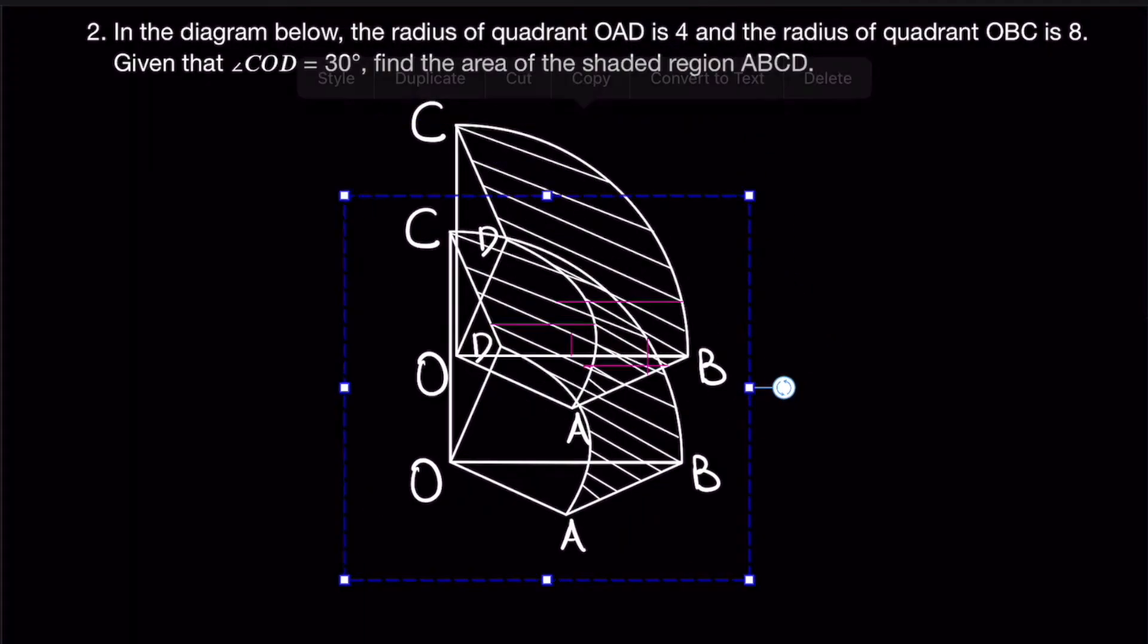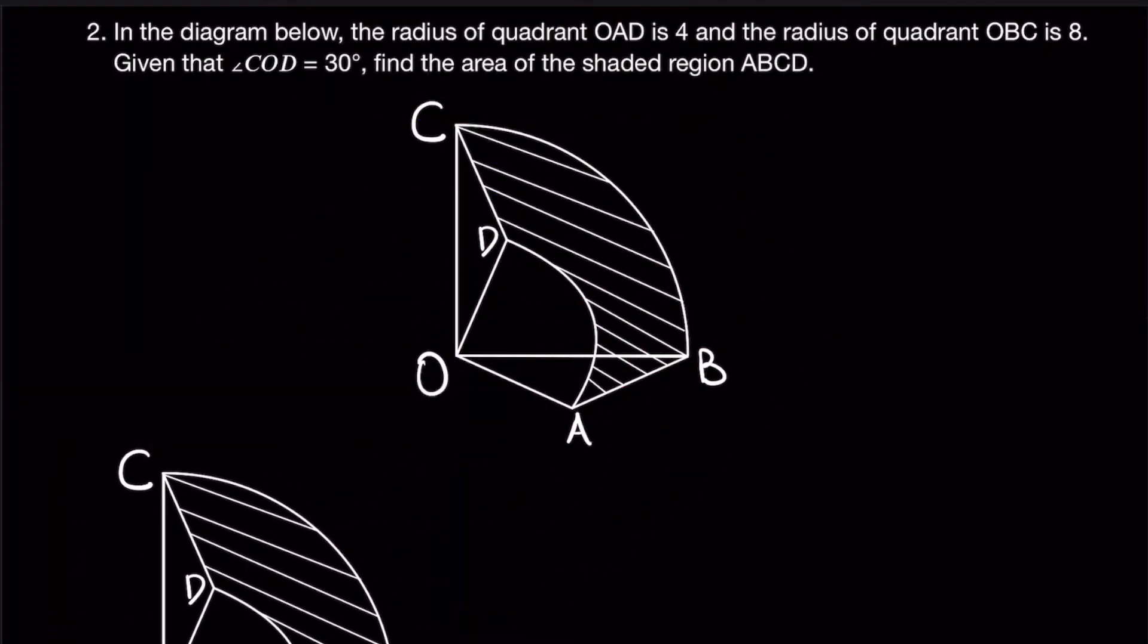Let me duplicate another model for us to use later. Alright, so firstly let's add in our angles which is 30 degrees for COD. Secondly, since we know that OBC is a quadrant, the remaining angle here is 60 degrees. And since we know that OAD is also a quadrant, we can see that angle AOD is 30 degrees.